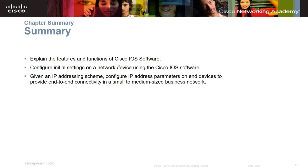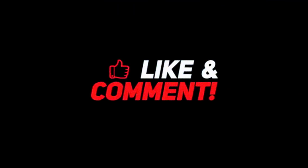In Chapter 2 we've explained the features and functions of the Cisco IOS software, configured initial settings on a network device using Cisco IOS, looked at IP address schemes and why we use them, configured IP addresses manually on end devices, and established end-to-end connectivity in a small to medium-sized business network. I hope this video was helpful — remember to subscribe and click the notification button. Your time is appreciated watching these videos, and I appreciate the feedback. Have a great day.